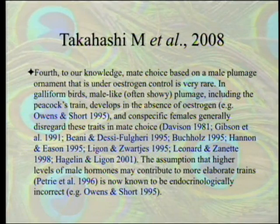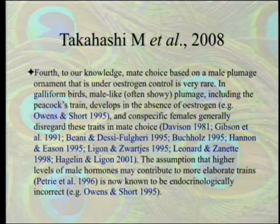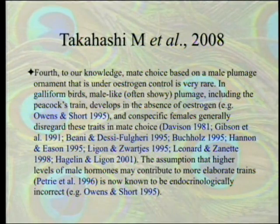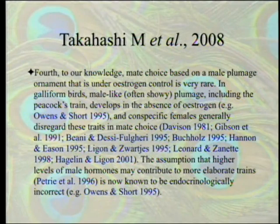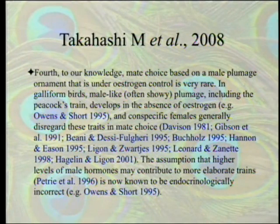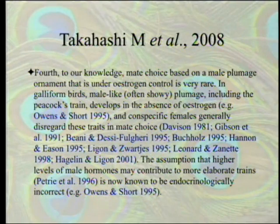What that means is if you have a bird and you give it estrogen, it will not develop this — it's only if you don't have enough estrogen that these features develop. Birds have a different sex chromosome system than mammals, using W and Z chromosomes, where females have two different chromosomes and males have the same. The assumption that higher levels of male hormones may contribute to more elaborate trains — that's Petrie et al.'s assumption — is now known to be endocrinologically incorrect.